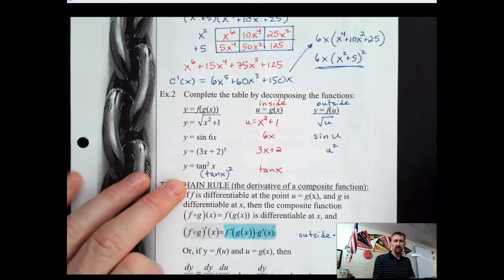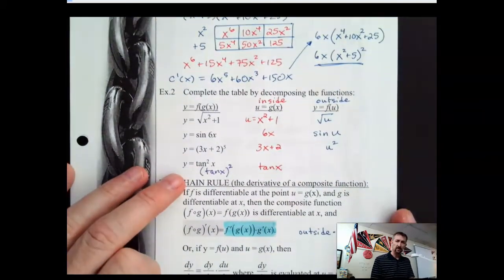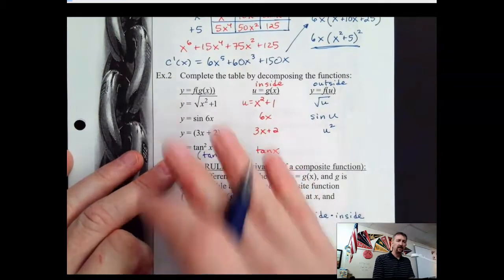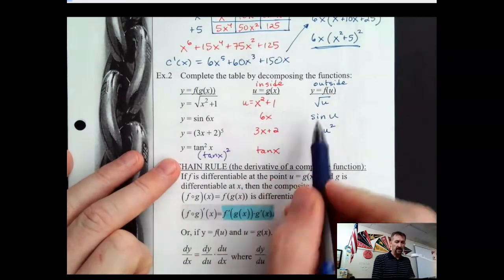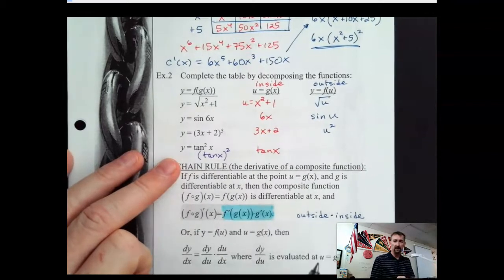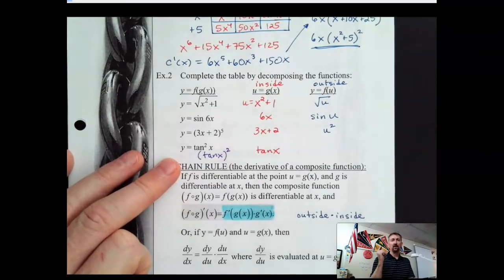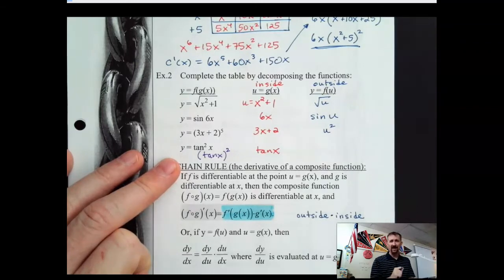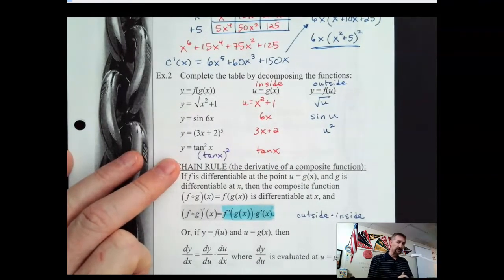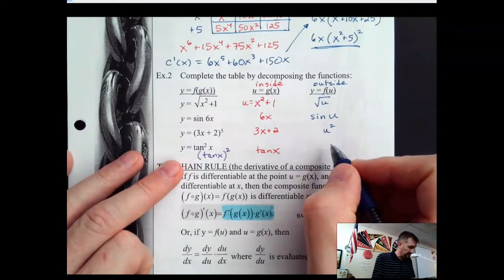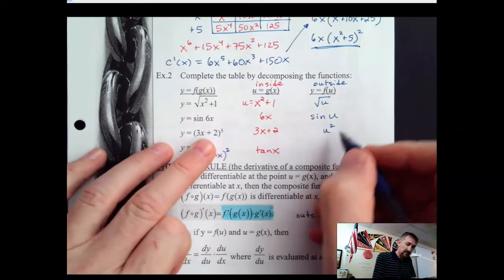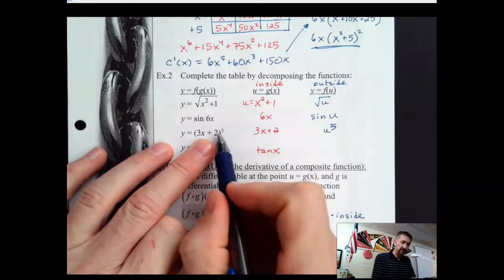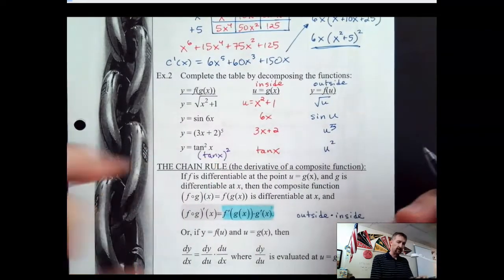It is so important that you utilize the pause button and do as much of this yourself as you can. Anybody could copy this down — that doesn't mean they know anything. I could go into a Japanese class and copy the characters on the board; that doesn't mean I know Japanese. So use that pause feature. And — this is u to the fifth, actually, the fifth power. This one is u squared.